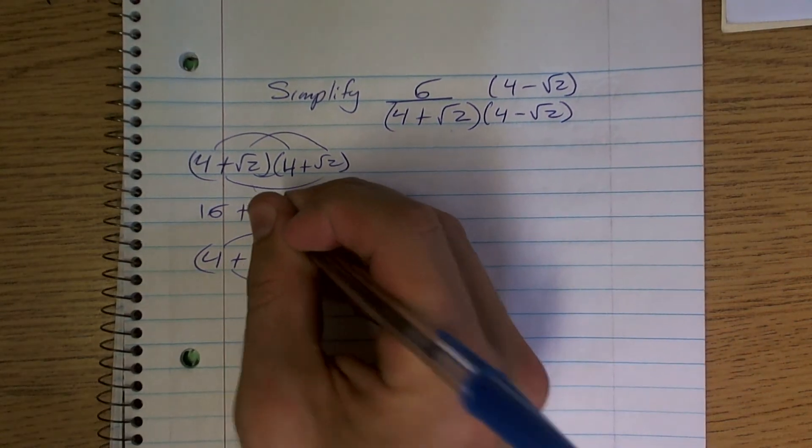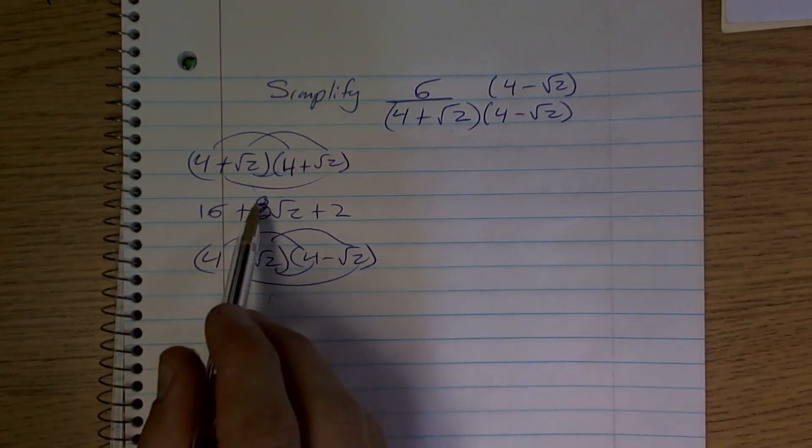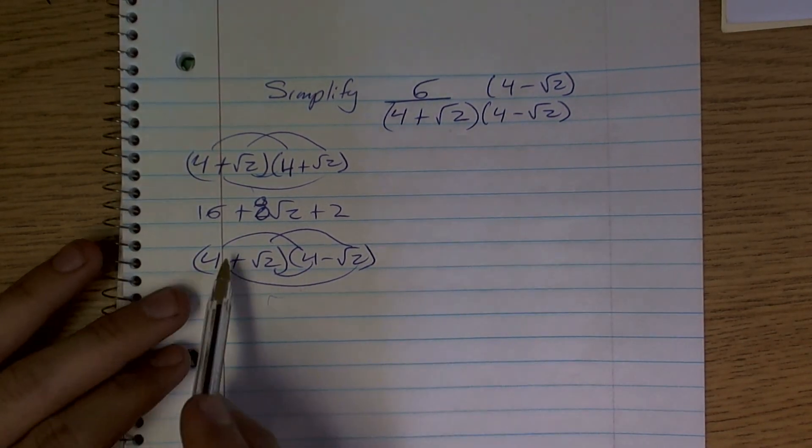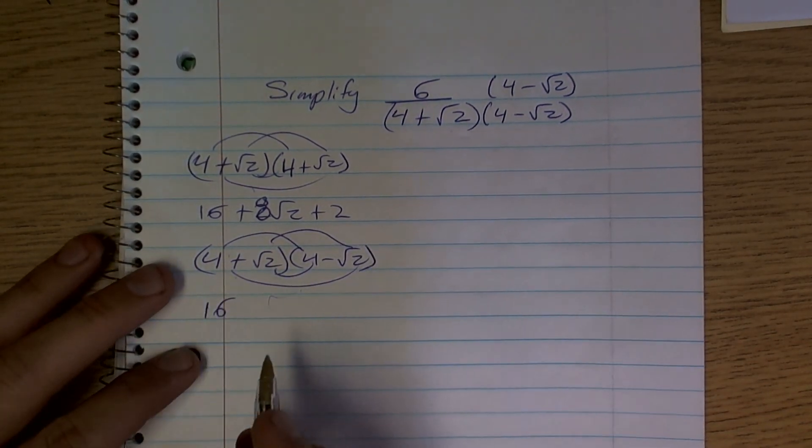That's actually 8. My bad. Not 2 radical 2, that's actually 8 radical 2. But let's just take a look, let's multiply them. 4 times 4 is going to give you 16.